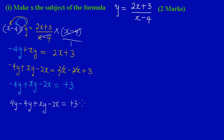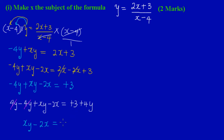Adding 4y to both sides, the negative 4y on the left cancels out, leaving xy minus 2x. On the right side I have 3 plus 4y, which I'll write as 4y + 3. So the equation simplifies to xy - 2x = 4y + 3.